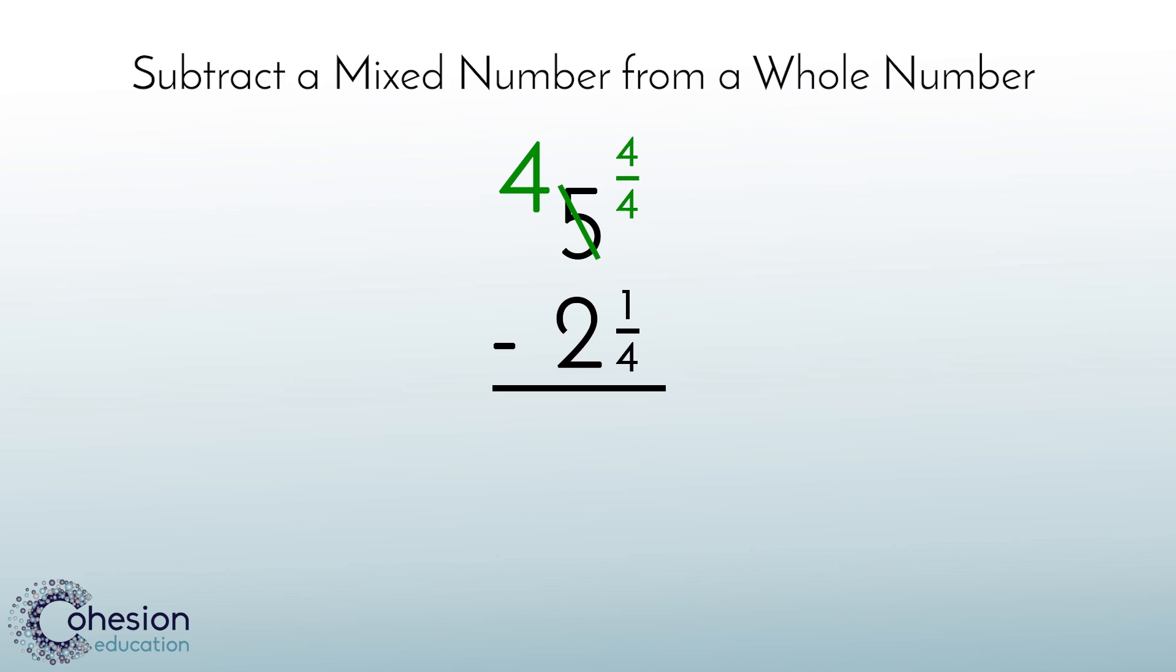Now I can subtract. 4 fourths minus 1 fourth equals 3 fourths. And 4 minus 2 equals 2. So, 5 minus 2 and 1 fourth equals 2 and 3 fourths.